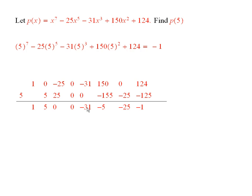5 times 0 is 0, minus 31. 5 times minus 31 is minus 155, and we add these together and we get negative 5. And then 5 times negative 5 is minus 25, add them, multiply by 5 again and you get negative 1.